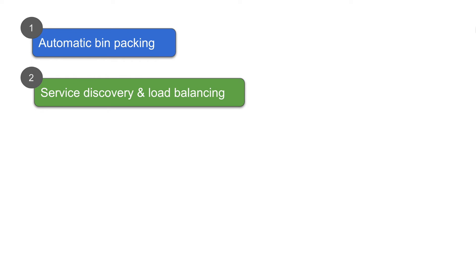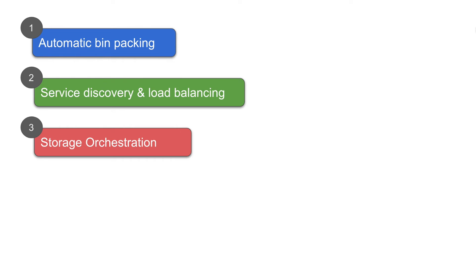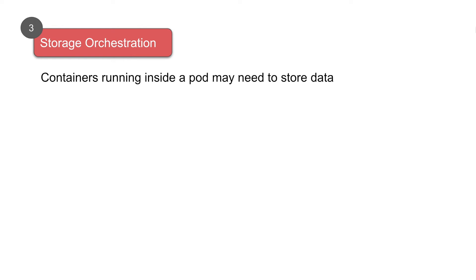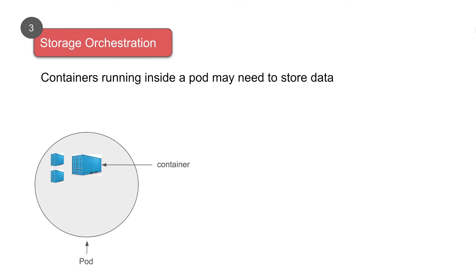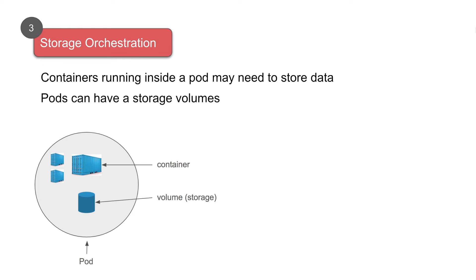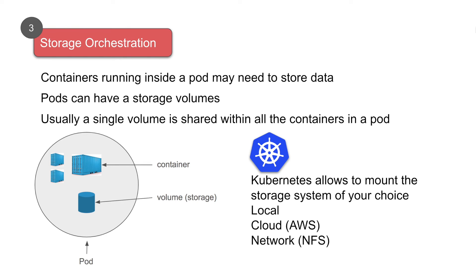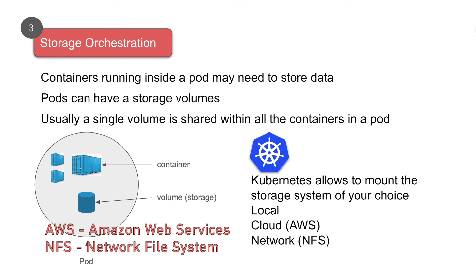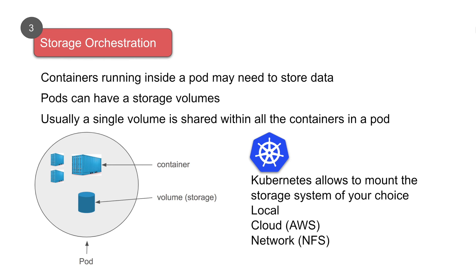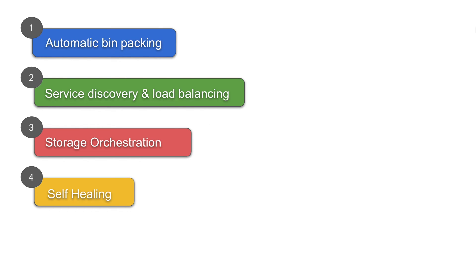The third feature is storage orchestration. Containers running inside a pod need some way to store their data. We can have a volume or storage resource in every pod, and usually a single volume is shared by all containers inside a pod. Kubernetes provides the option to select the type of storage: it can be local storage, cloud storage like AWS, or network storage like NFS.